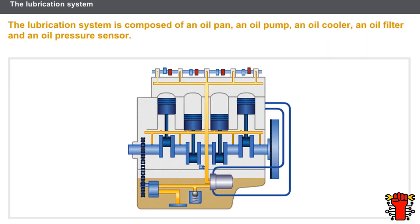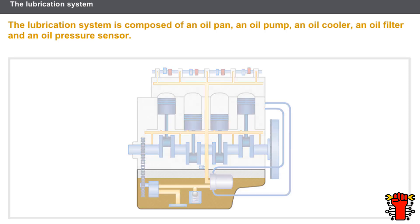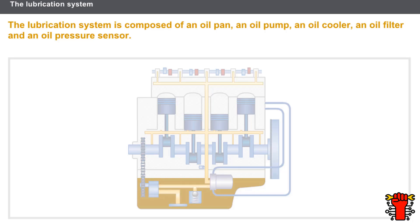The lubrication system has the following components: an oil pan, an oil pump, an oil cooler, an oil filter, and an oil pressure sensor.